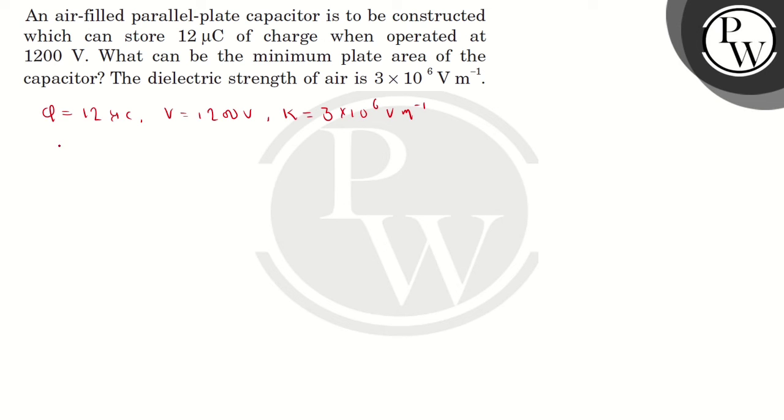Let us find the distance between the parallel plates. D is equal to V by K. So V is given as 1200V and K is given as 3 × 10^6 V. It comes out to be 4 × 10^-4 meter.